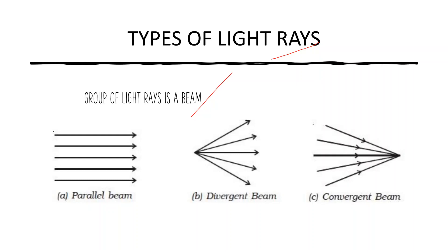Next is the divergent beam. In a divergent beam, all the light rays emerge from a single point and spread out — they never meet anywhere. The opposite of this is a convergent beam. In a convergent beam, all the light rays come from different places and meet at a single point. The difference: divergent rays start from a point and never meet; convergent rays start from different places and meet at a point.